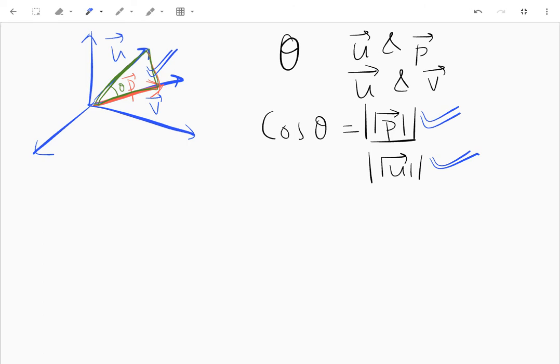So let's - I'll just cross multiply and what I get is the magnitude of vector p is equal to cos theta times magnitude of vector u. Now what is cos theta if I consider the vectors u and v and I take their dot product?